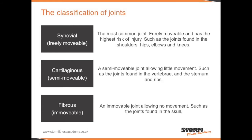There are three classifications of joints. The first is the synovial joint, which is the most common joint in the body. It is freely movable and has the highest risk of injury. It can be found in the shoulders, hips, elbows, and the knees.